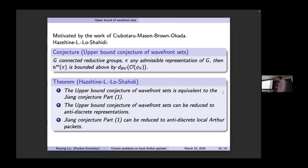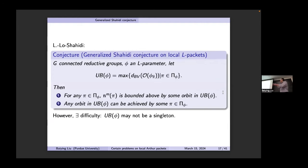Still, for these representations it's very hard — all these conjectures are equivalent. Shahidi's conjecture is for tempered L-packets; Johnson's conjecture is for local Arthur packets. One can ask: what about arbitrary local L-packets? Motivated by the upper bound conjecture for individual representations, in joint work with Law and Shahidi, we make this general Shahidi conductor conjecture for local L-packets. For five L-parameters, you define a set of maximal orbits coming from the upper bound for π, put all these upper bounds together, and take the max.